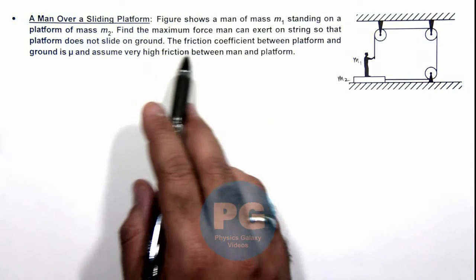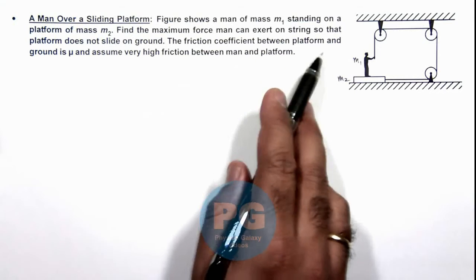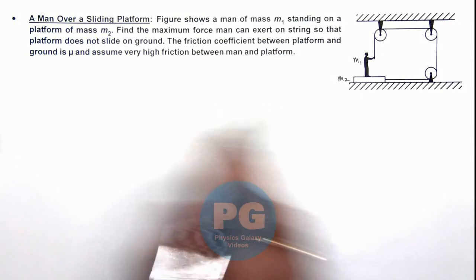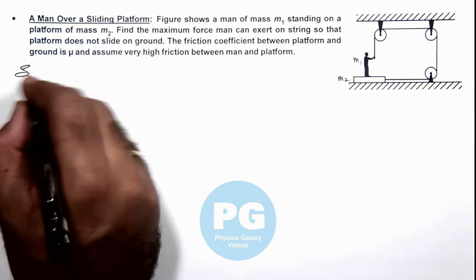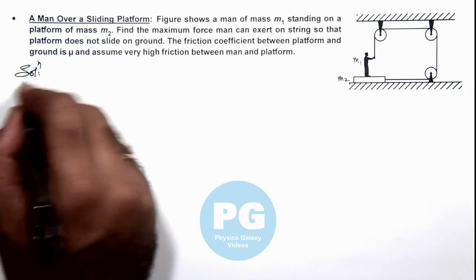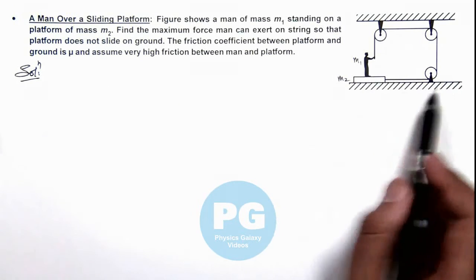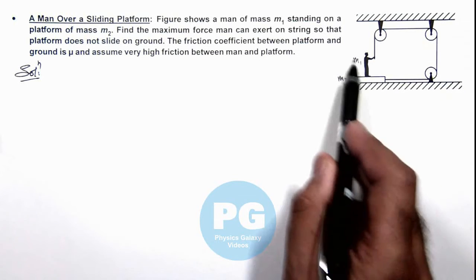We are given that the friction coefficient between platform and ground is μ, and we can assume very high friction between man and platform. The man is holding a string which is connected to the platform on which he is at rest.